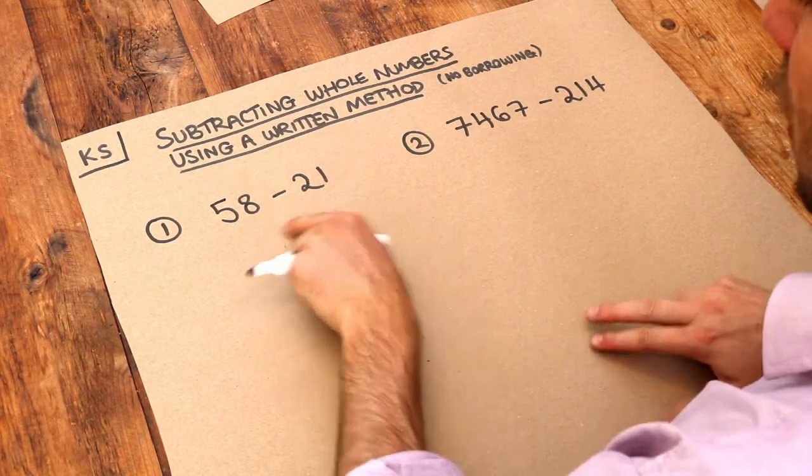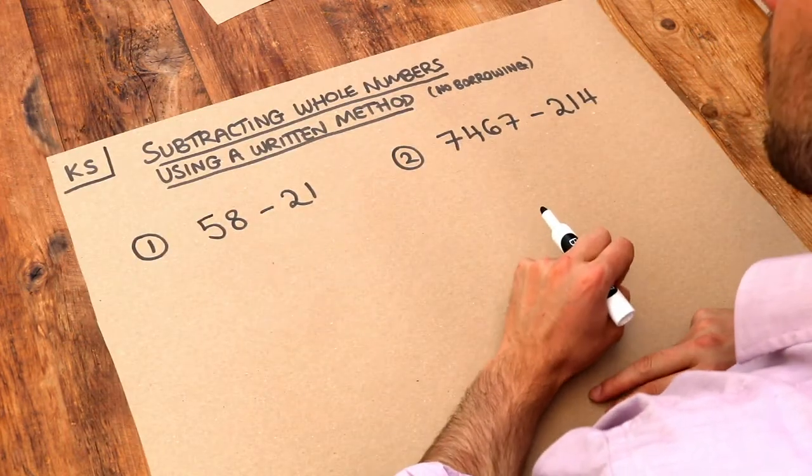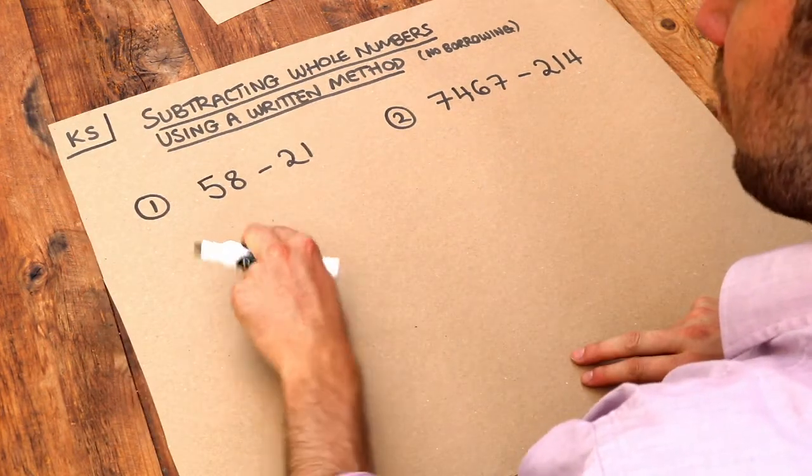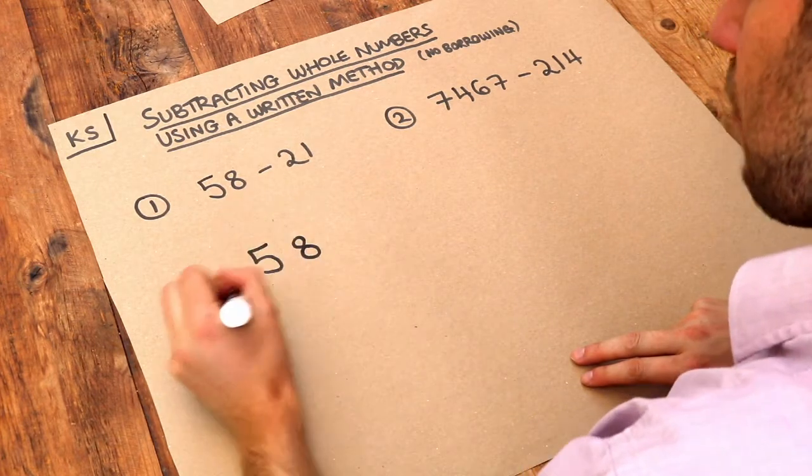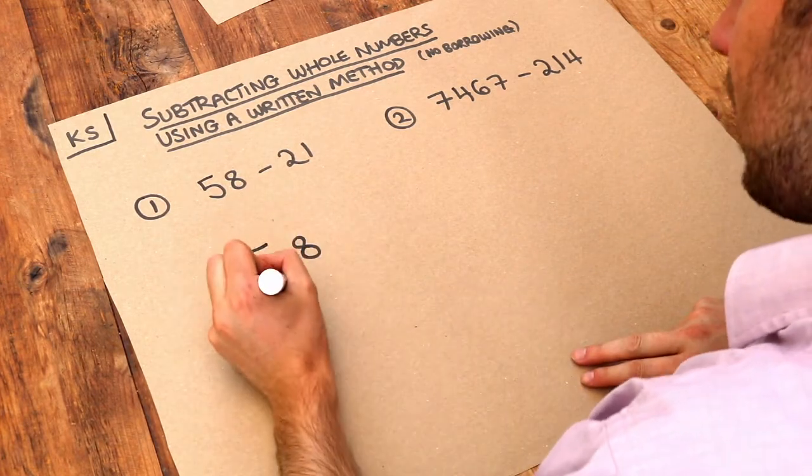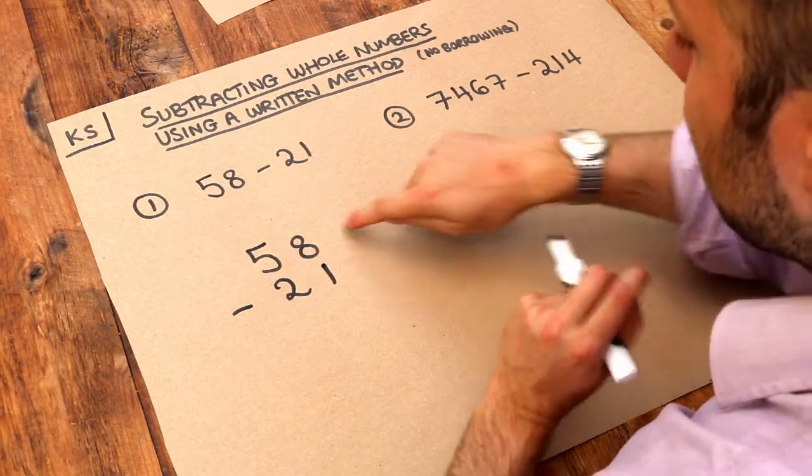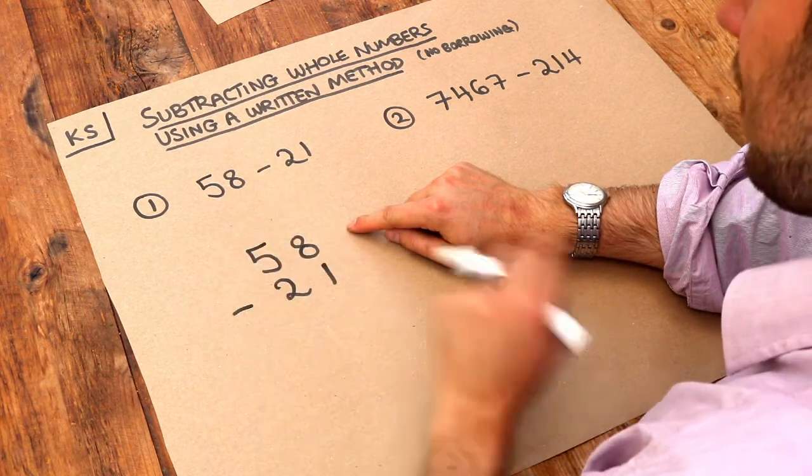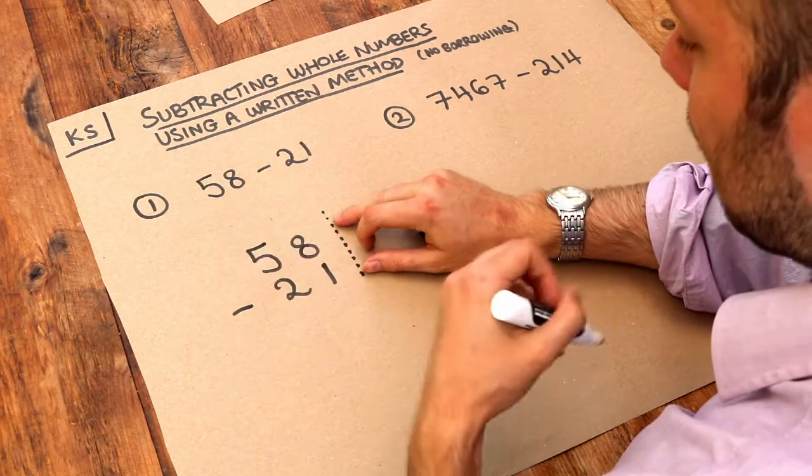So we've got two questions here. We want to do 58 minus 21, and we're going to use something called column subtraction. What this means is we lay out our numbers in rows, so we've got 58 here and then we're subtracting 21. What it means to have column subtraction is that we make sure that the digits in each column have the same place value, so we align it up to this right line here.